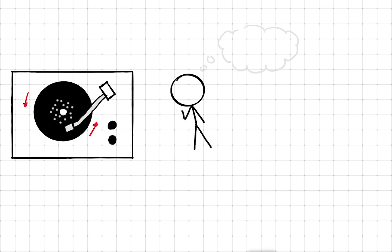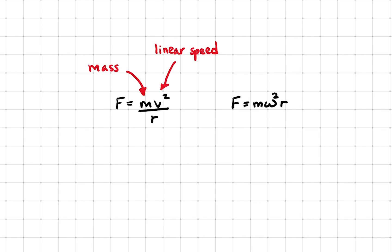Do you recall the two equations for centripetal force? F is mv squared over r, but it's also equal to m omega squared r. In this equation, radius is inversely proportional to the centripetal force. But here, radius is proportional to force. Do these equations contradict each other? Let's find out.